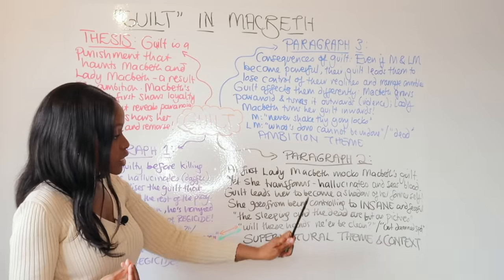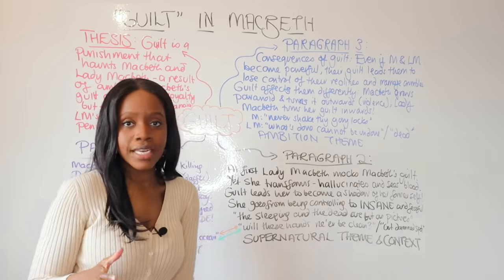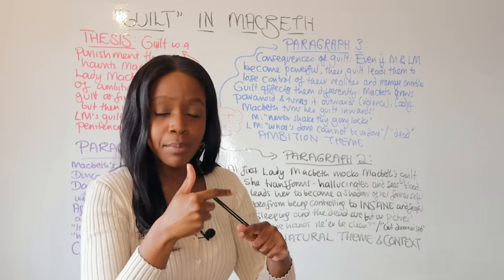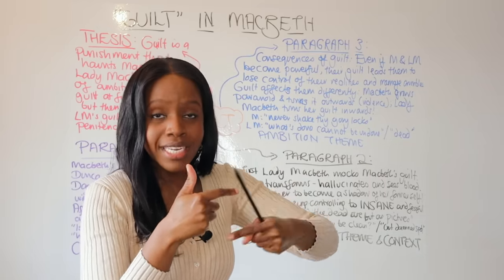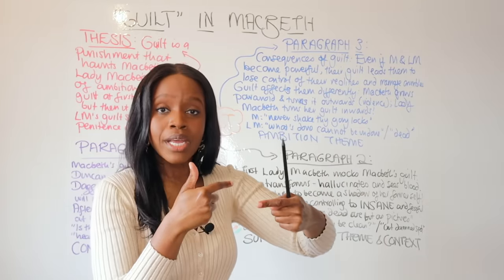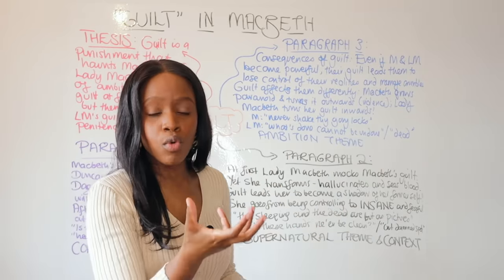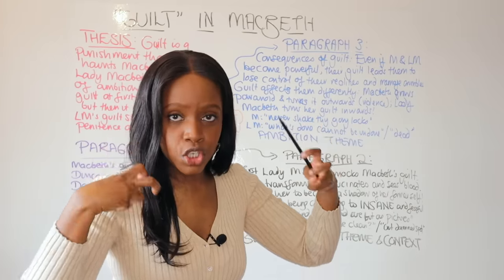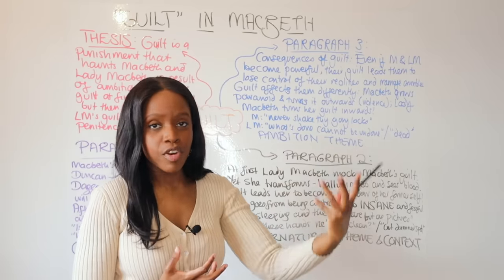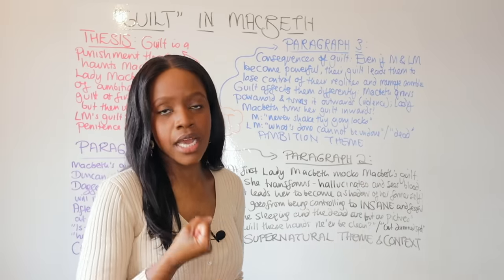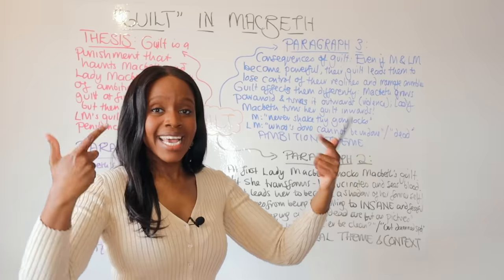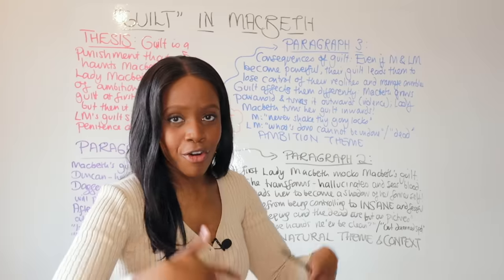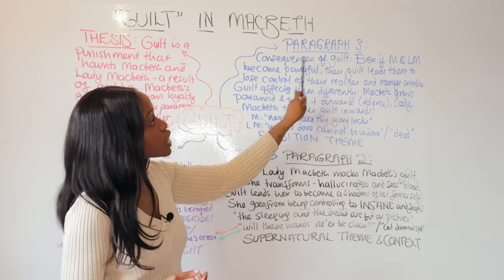You must also mention the famous exclamatory quotation: 'Out, damned spot! Out, I say!' Make this paragraph connect to the supernatural theme, showing that Lady Macbeth's reliance on the supernatural leads to her downfall and guilt. Contextually, tie this to the Jacobean belief that Lady Macbeth was seen as the fourth witch, because she went against her nature as a woman by being ambitious and goading Macbeth into killing the king — making her guilt God's punishment for her ambition.